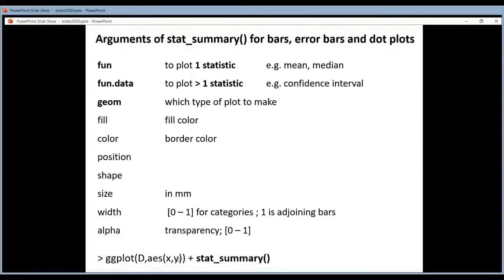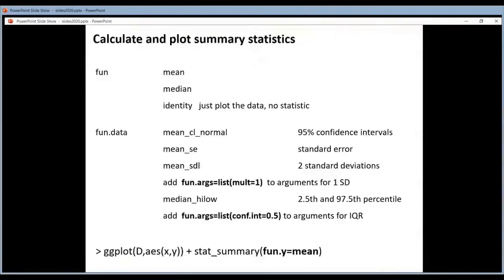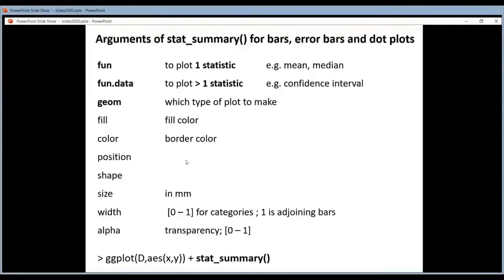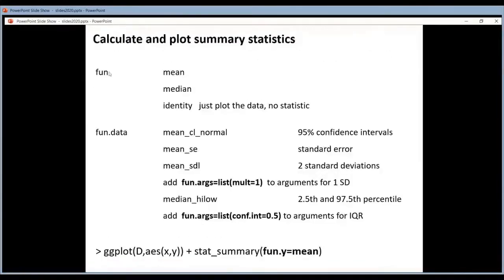You define the data you want to plot, do a plus, and then add the stat_summary function. For the fun argument you set it equal to mean or median. If for some reason you don't want to calculate a statistic you can set it to identity, but in that case I would use a geom instead of stat_summary — so I never do it.